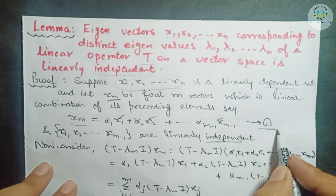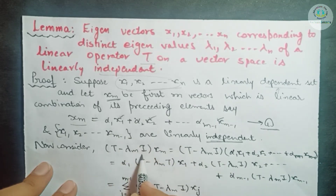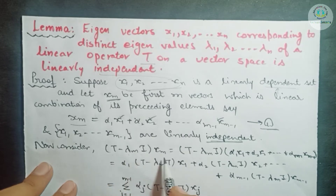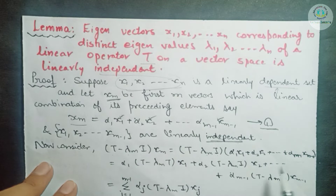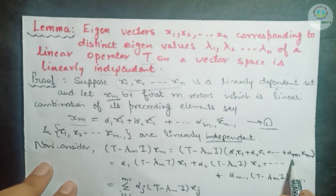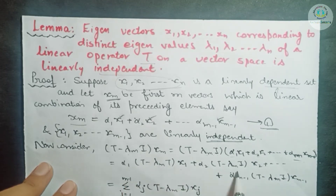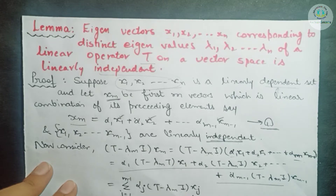We will operate on both sides of equation number 1 with (T − λₘI). So (T − λₘI)xm = (T − λₘI) applied to the whole combination. We apply (T − λₘI) separately to each element; the scalars α1, α2, ..., αₘ₋₁ all come outside. We write this in summation form: summation j from 1 to m−1 of αⱼ·(T − λₘI)xⱼ.